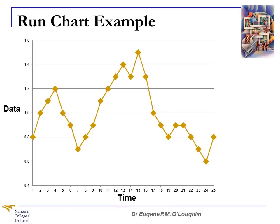Now let's concentrate on the run chart itself. I've simply taken this chart from the previous spreadsheet, showing data plotted against time. This is measuring performance over a period of time, so I want to use this run chart to see if my performance is within or outside of control. The first thing we can do is calculate the average value, represented here by the red line. In this case, the average is 1.0 across all 25 values. There's quite a lot of variation around the average — in fact, only three out of 25 values coincide with the average value.